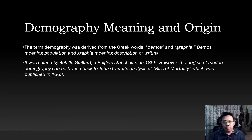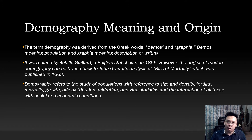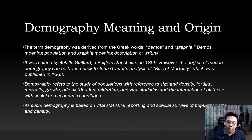However, the origins of modern demography can be traced back to John Graunt's analysis of Bills of Mortality, which was published in 1662. Demography refers to the study of populations with reference to size and density, fertility, mortality, growth, age distribution, migration, and vital statistics, and the interaction of all these with social and economic conditions. As such, demography is based on vital statistics reporting and special surveys of population size and density.